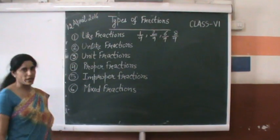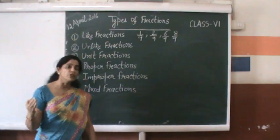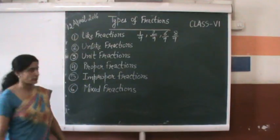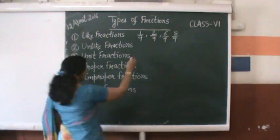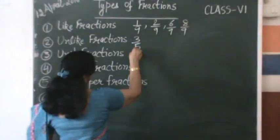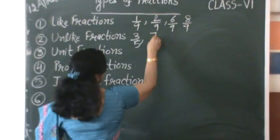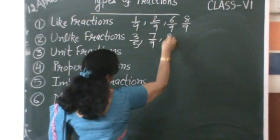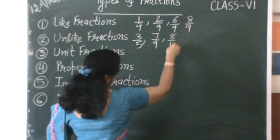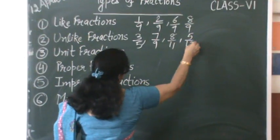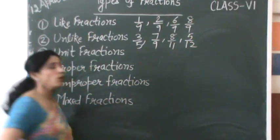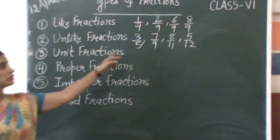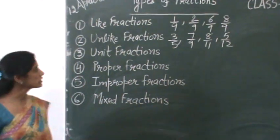Unlike fractions. Fractions with a different denominator are called unlike fractions. For example, 3 by 5, 7 by 9, 8 by 11, and 5 by 12 are all called unlike fractions, wherein the denominators are different.